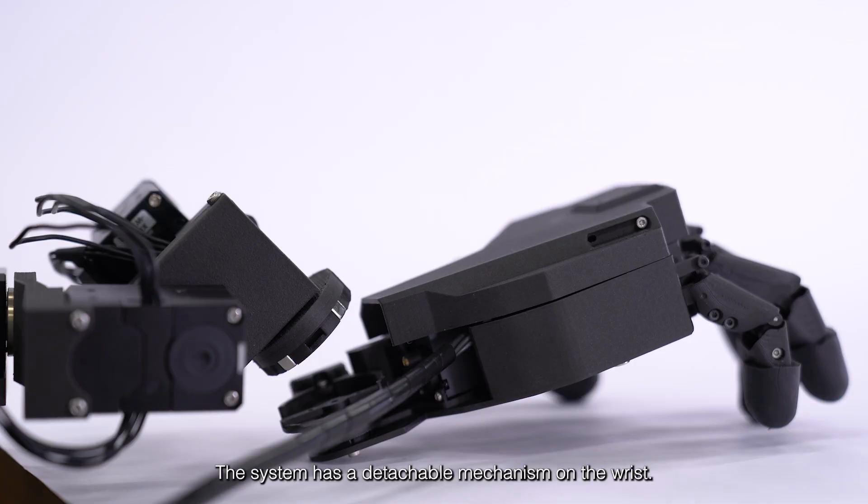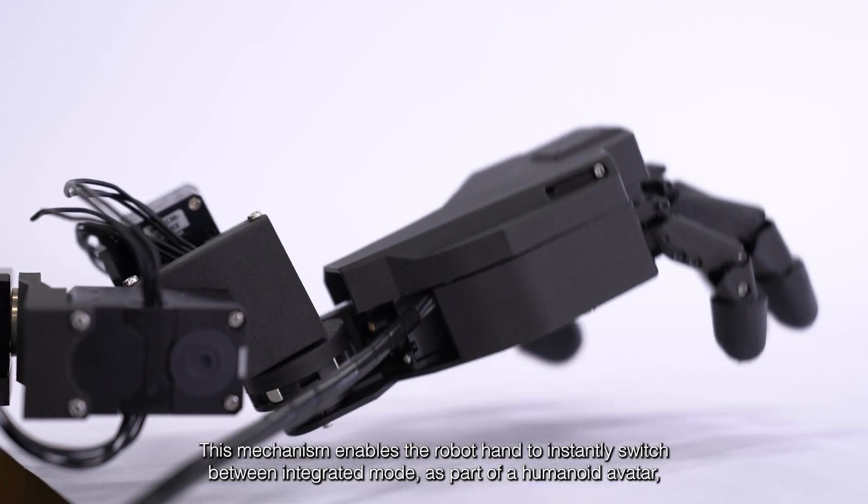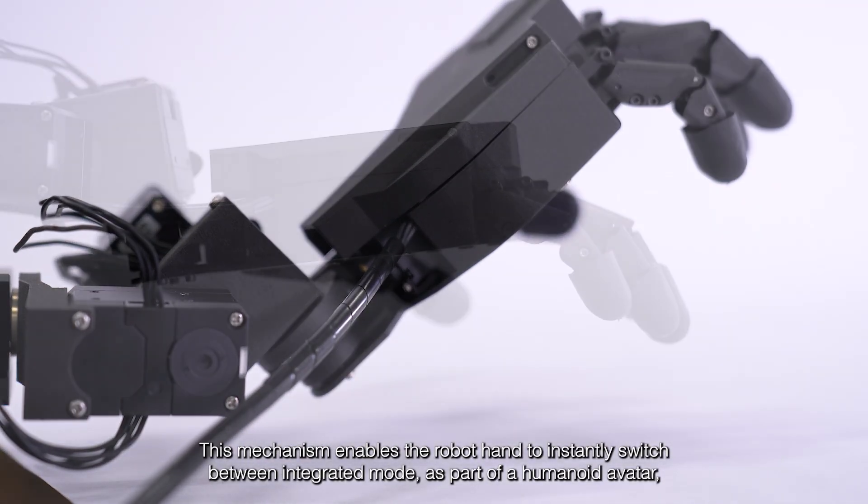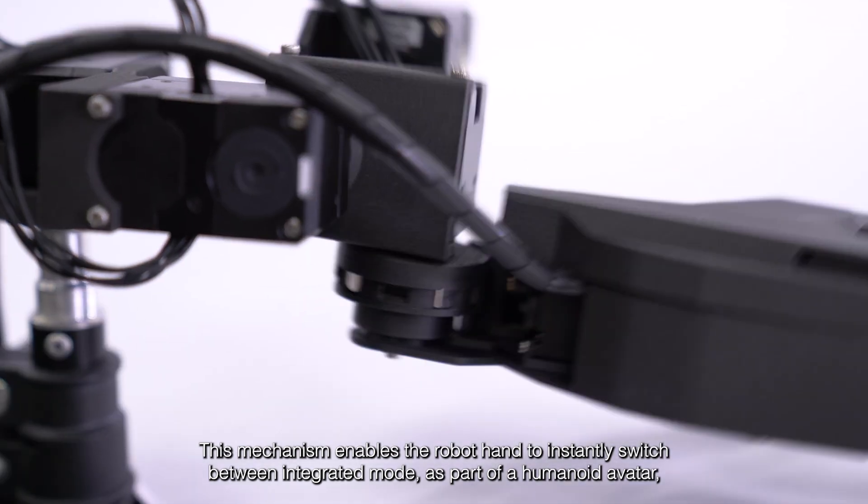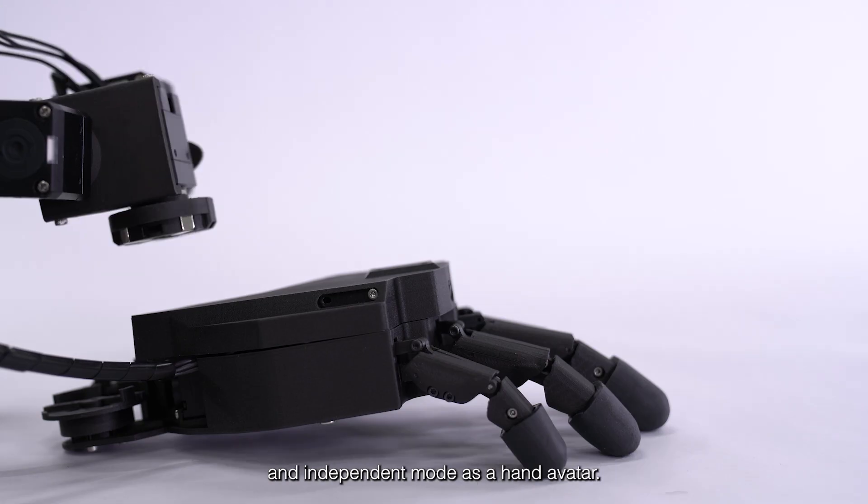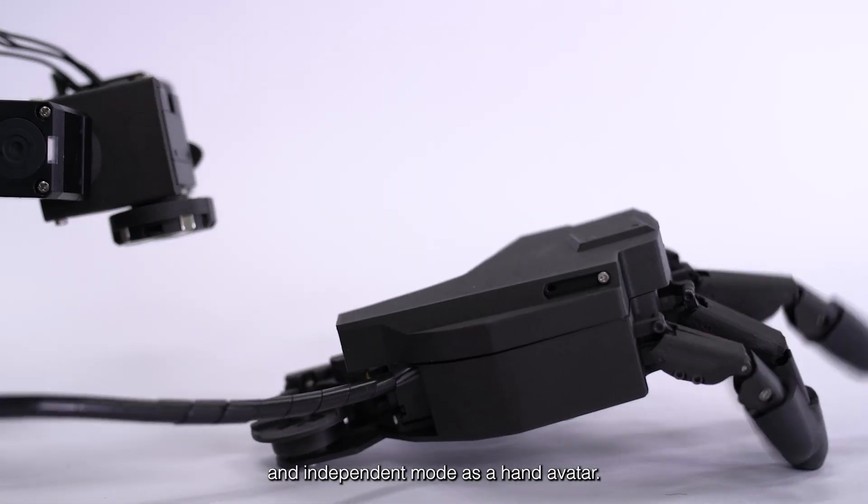The system has a detachable mechanism on the wrist. This mechanism enables the robot hand to instantly switch between integrated mode as part of a humanoid avatar and independent mode as a hand avatar.